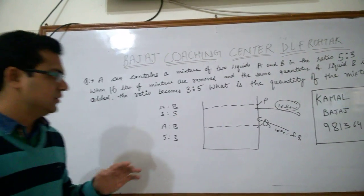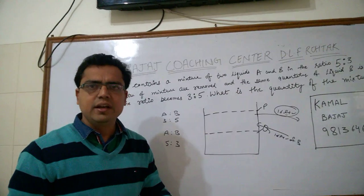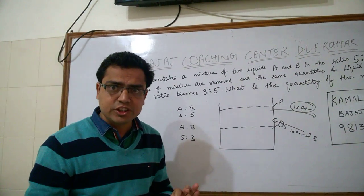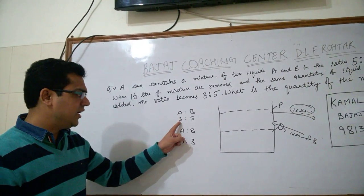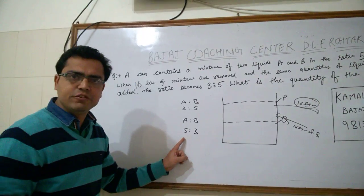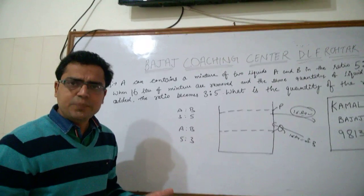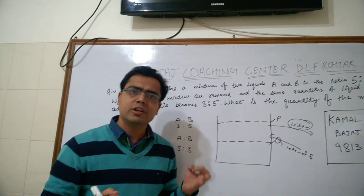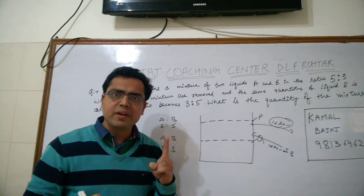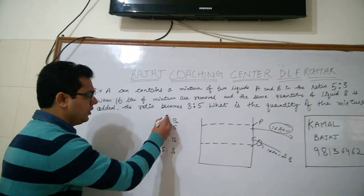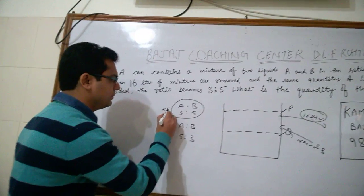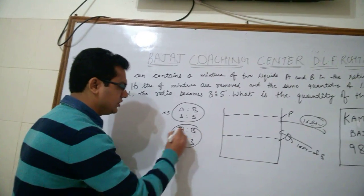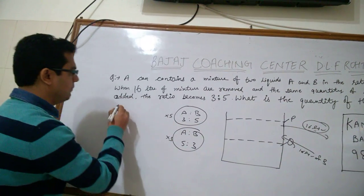Now, think, you are adding only B. It means A is fixed in this question, but in ratio, here A is 3 units, here A is 5 units. It is a property of ratio. You can multiply a ratio by any factor according to your convenience. Here, you want to make A fixed. So, what we will do? We will multiply this ratio by 5 and we will multiply this ratio by 3.